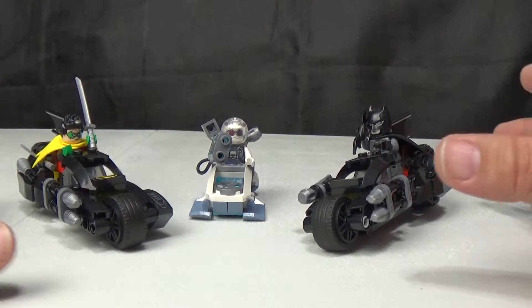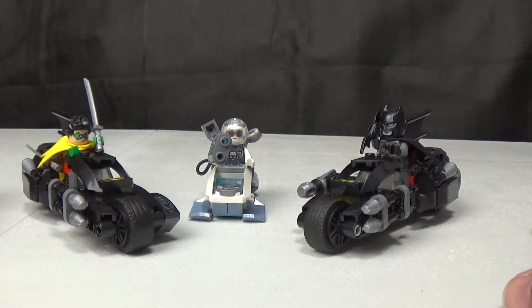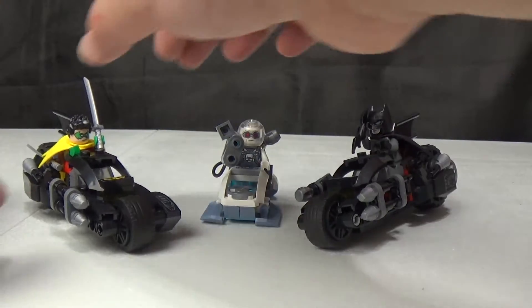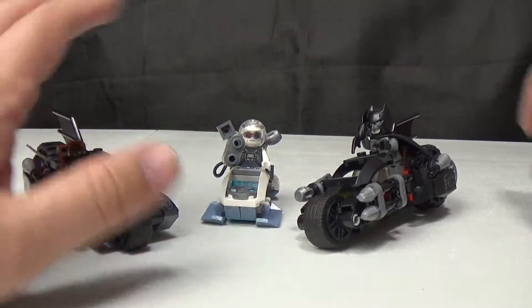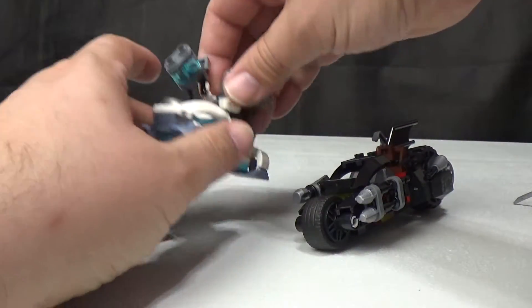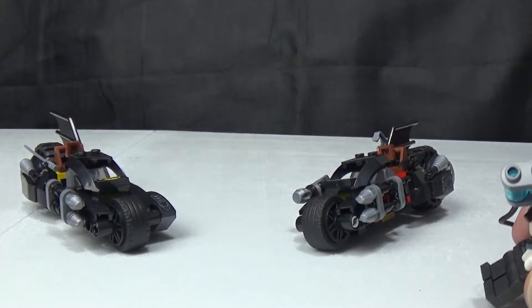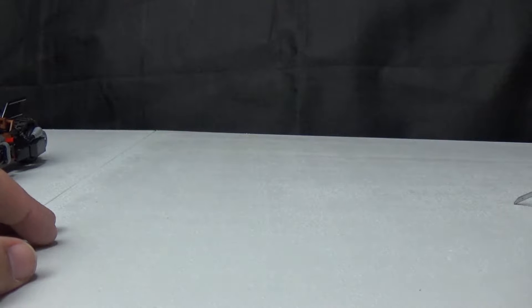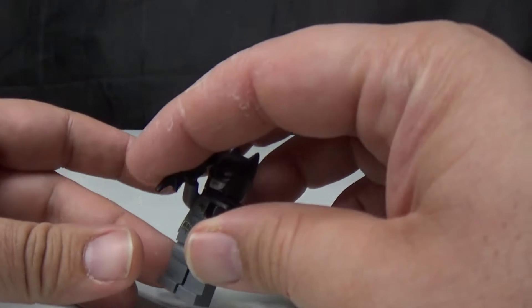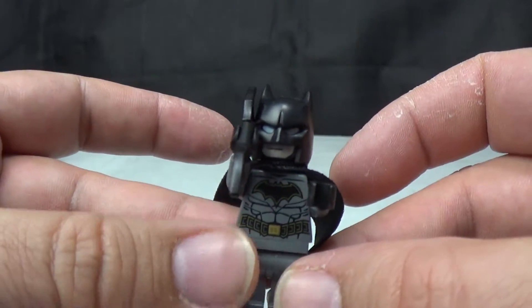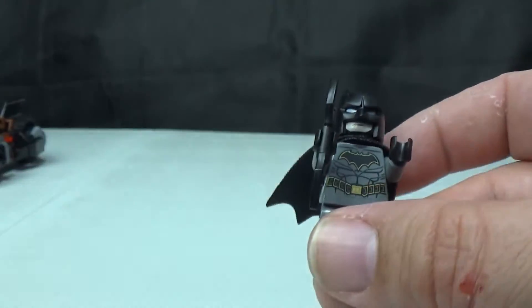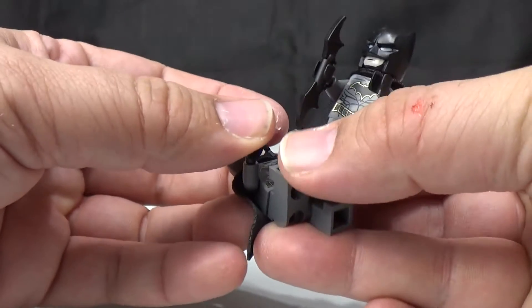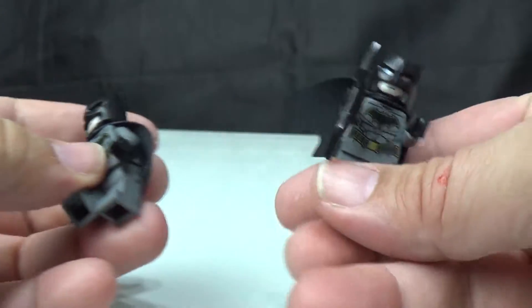We have Batman and Robin and Mr. Freeze with a bowl on his head. Let me go ahead and pop everybody off their vehicles and we'll look at them really quick, especially Batman since I've already shown off Batman. I think he's my third Batman, maybe my fourth.